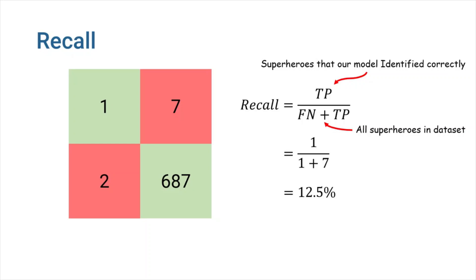As you can see, the high number of false negatives, which are the superheroes that are labeled as normal, results in a low recall.